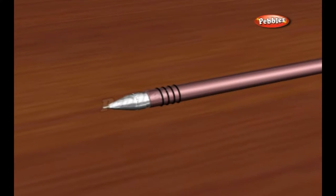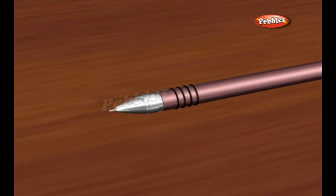A ballpoint pen is a pen that uses a small, rotating ball made of brass, steel or tungsten carbide to disperse ink as you write.